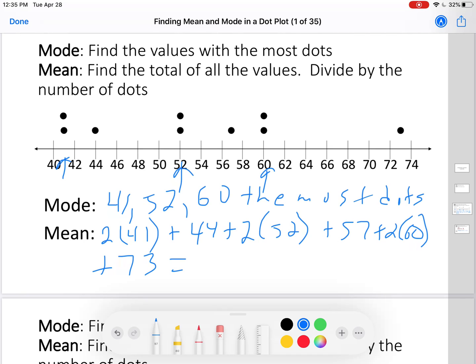So two times 41 plus 44 plus two times 52 plus 57 plus 120 plus 73 equals 480. Now I have to divide it by how many dots there are. The number of dots. That's one, two, three, four, five, six, seven, eight, nine.